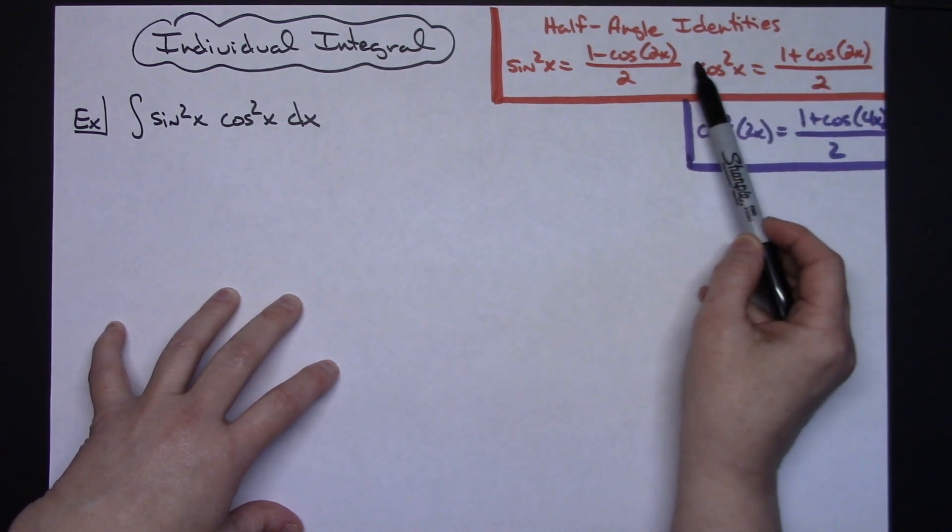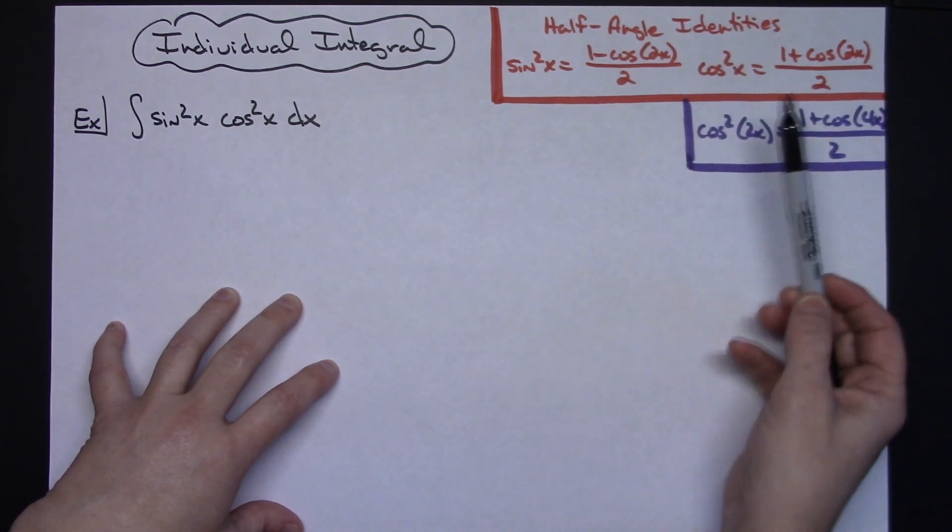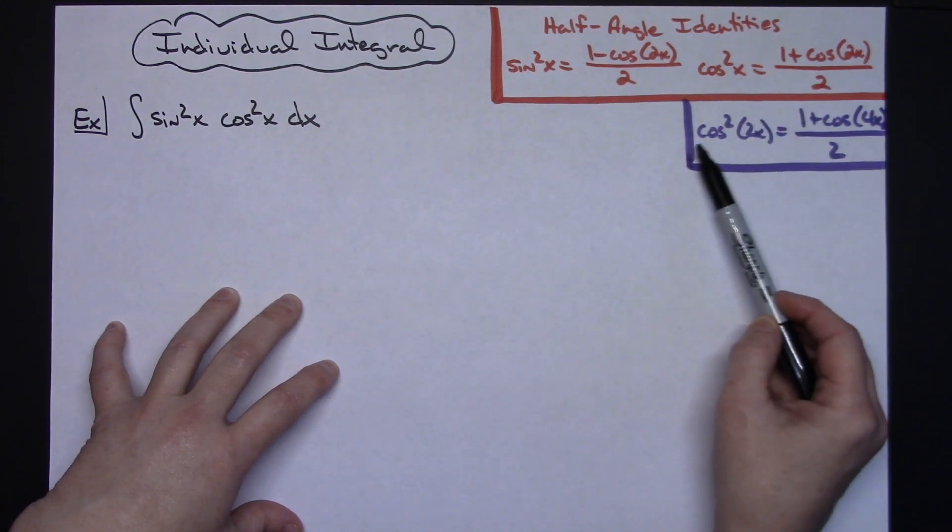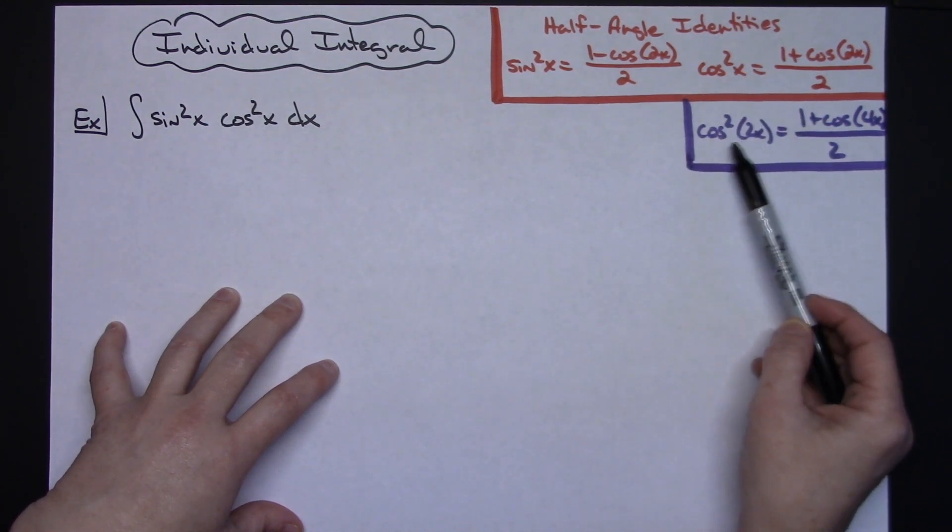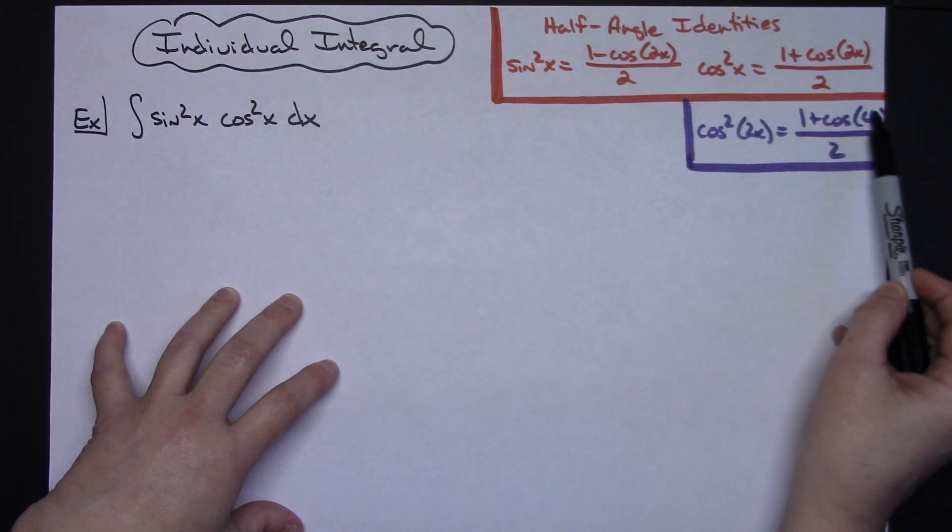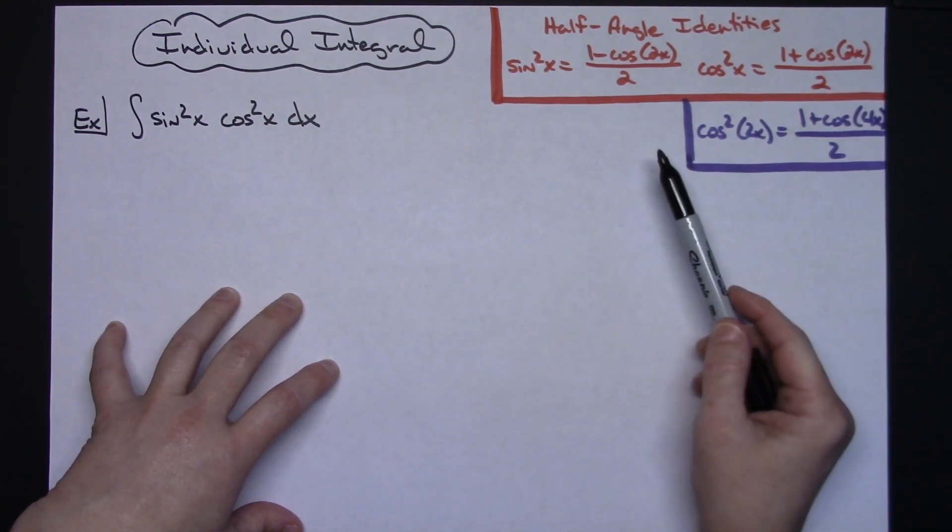And if you know the original half angle identities, then I know that if I have the cosine squared of 2x, that is also a half angle identity and I just need to make sure that is a 4x so that I've got that same ratio going on.